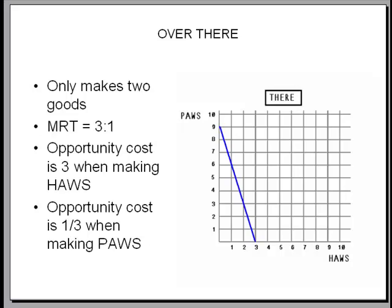Whenever they make haws they give up three paws. Whenever they make a paw they only give up one-third of a haw.